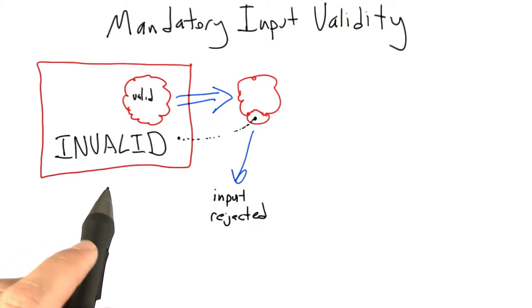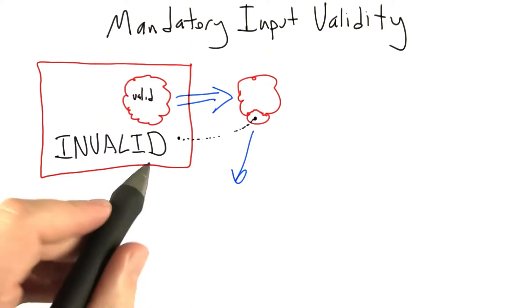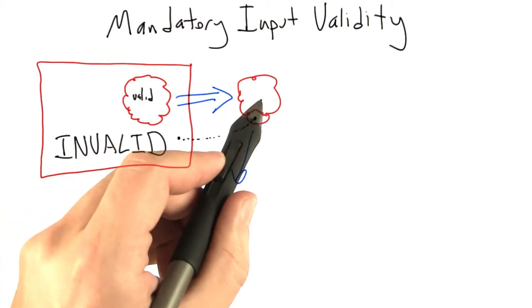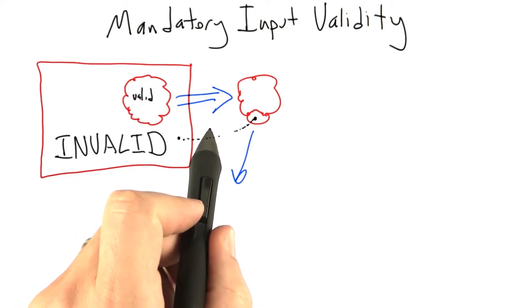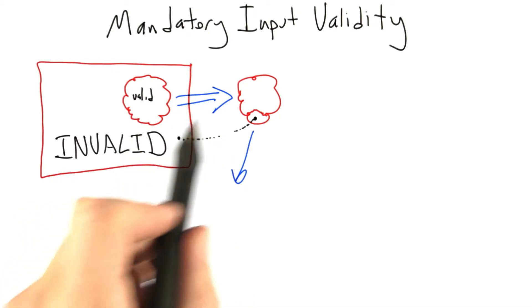But there's actually something different that can happen that's much worse than that. The other thing that can happen is the input isn't rejected. The reason that an invalid input might not be rejected is that the software under test fails to contain sufficient validity checking logic to distinguish valid inputs from invalid inputs.